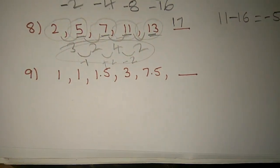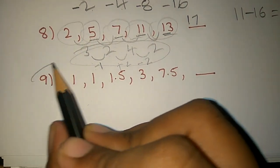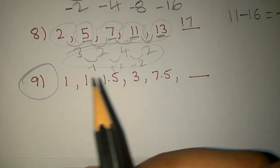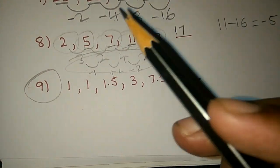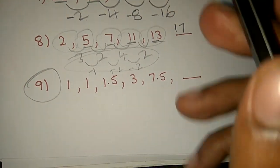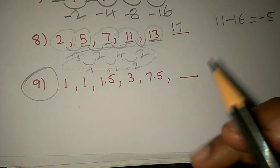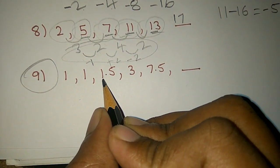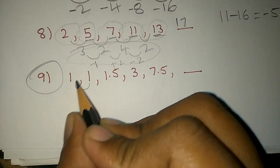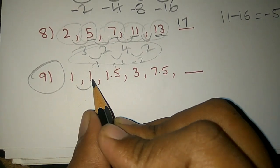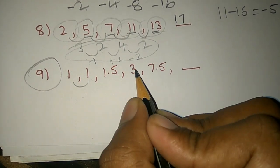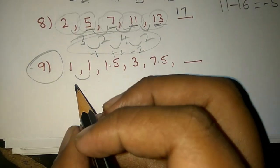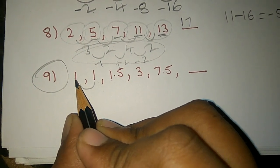If you look at this type of sum, it is rare but possible to see. If you practice, you can recognize it. The difference here is 0.5, then 1.5 — so the difference is not the same. This is a series with fractional differences.